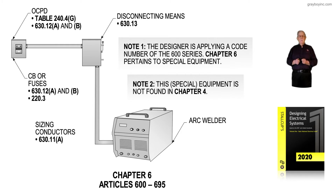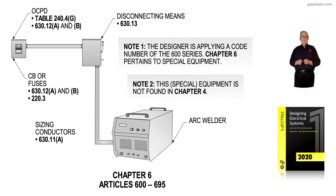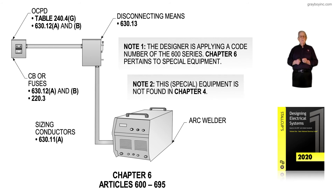As a designer designing the overcurrent device, Table 240.4G says a welder's overcurrent device can be sized greater than 100% of the welder's amps. 630.12A and B gives the percentages based on whether it's an arc welder, a resistance welder, or a cracker-box type welder. The circuit breaker is 600 volts or less. 220.3 says it's okay to go to Chapter 6 and review 630.12A and B, because Article 220 cannot handle this welder. We size those conductors in accordance with 630.11A.